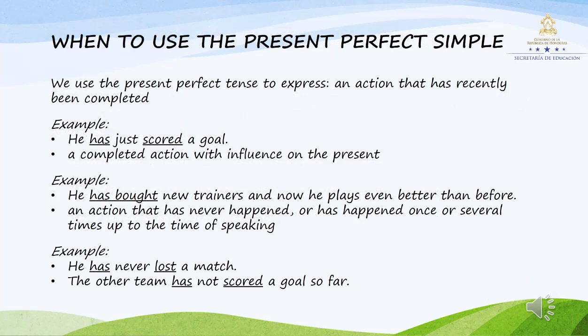When to use the present perfect simple. We use the present perfect tense to express an action that has recently been completed. Example: He has just scored a goal. A completed action with influence on the present. Example: He has bought new trainers and now he plays even better than before. An action that has never happened or has happened once or several times up to the time of speaking. Example: He has never lost a match. The other team has not scored a goal so far.